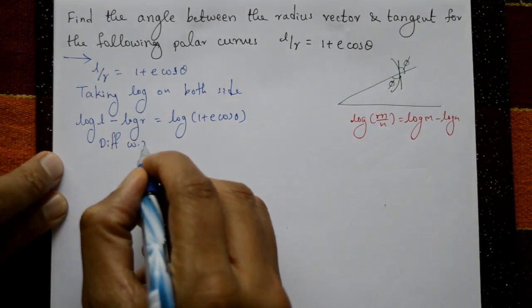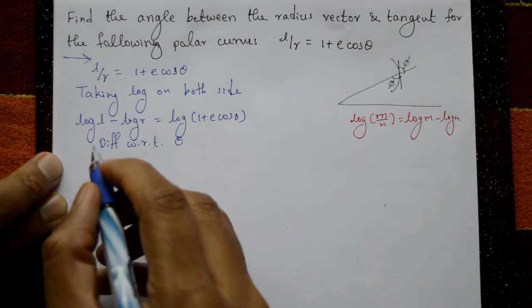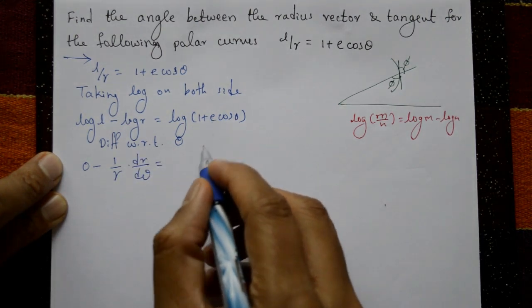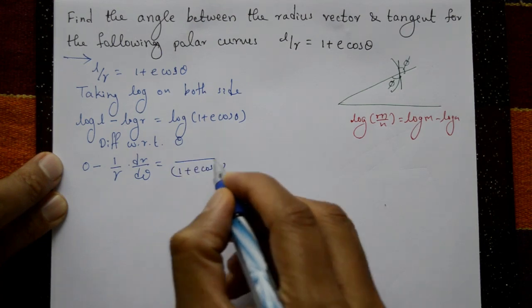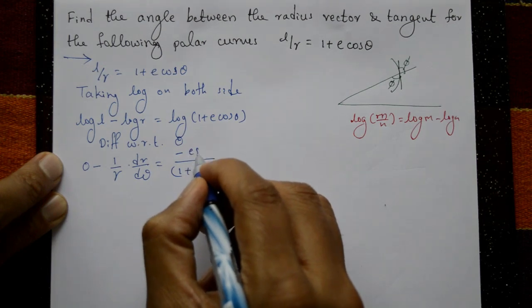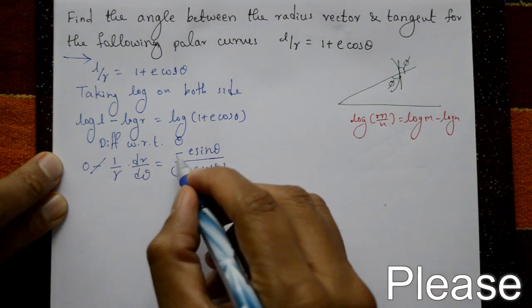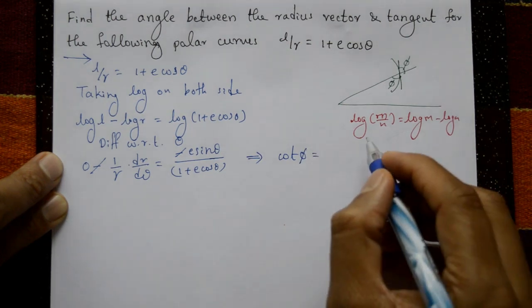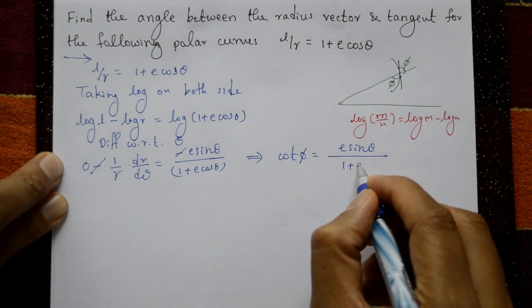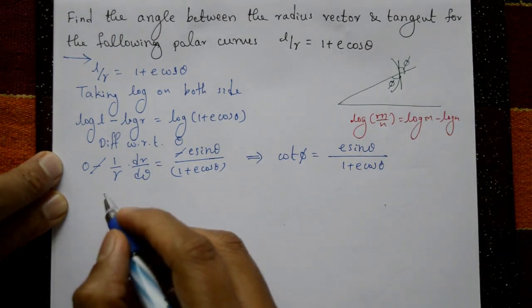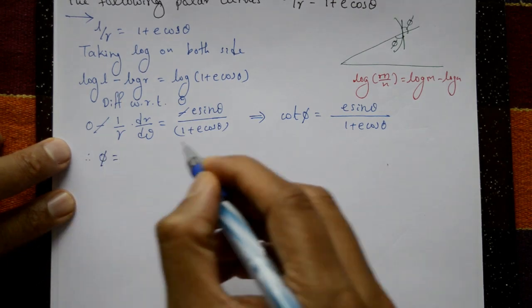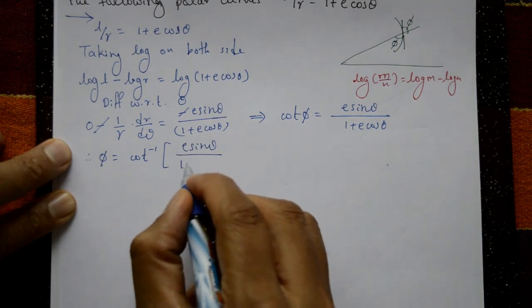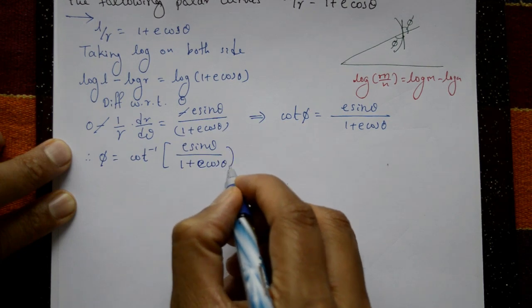Differentiating with respect to θ: log l is 0, so −(1/r)(dr/dθ) = −e·sin θ/(1 + e·cos θ). The negatives cancel, giving cot ψ = e·sin θ/(1 + e·cos θ). Therefore ψ = cot⁻¹(e·sin θ / (1 + e·cos θ)).